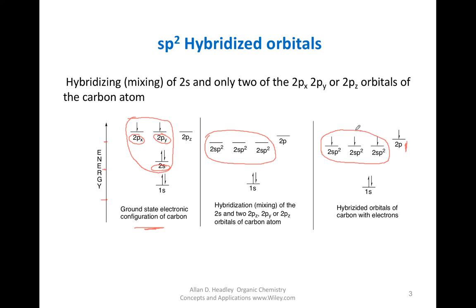The three sp2 orbitals are the ones that will bond to hydrogen, another hydrogen, and to another carbon. And of course, it has one electron in the p orbital. Let's give you a better visual of this diagrammatic representation of the sp2 orbital.